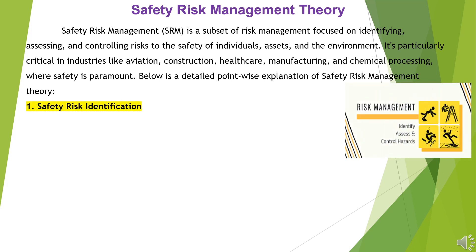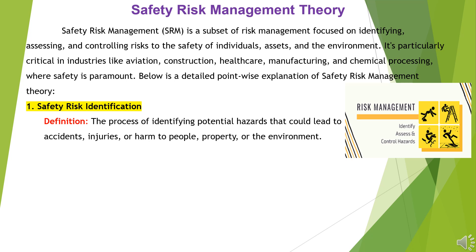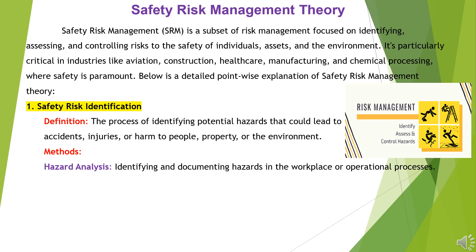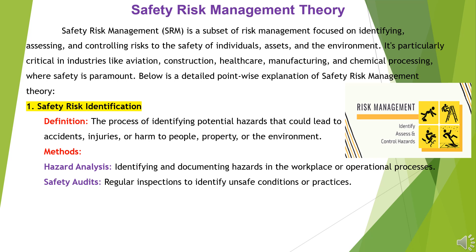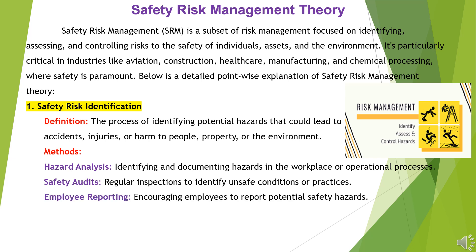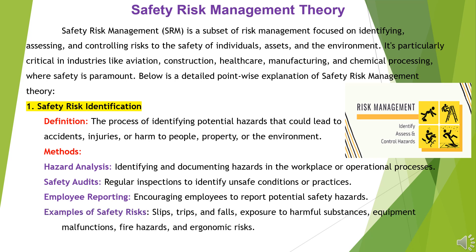1. Safety Risk Identification. Definition: the process of identifying potential hazards that could lead to accidents, injuries, or harm to people, property, or the environment. Methods include hazard analysis — identifying and documenting hazards in the workplace or operational processes — safety audits with regular inspections to identify unsafe conditions or practices, and employee reporting, encouraging employees to report potential safety hazards. Examples of safety risks include slips, trips, and falls, exposure to harmful substances, equipment malfunctions, fire hazards, and ergonomic risks.